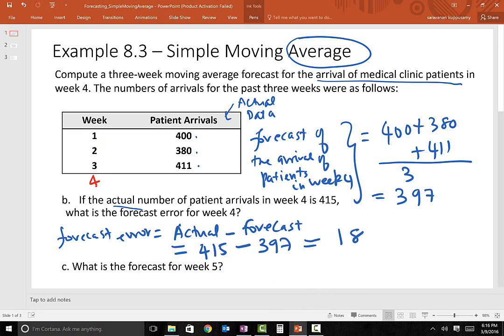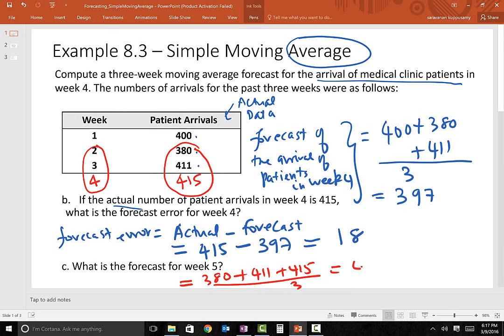During the fourth week, they had an actual arrival of 415. Now they're asking what is going to be the forecasted value for week five. The forecasted value for week five is the average of the last three weeks data. You have to pick week two, week three, and week four. We take an average of these three numbers: 380 plus 411 plus 415 divided by three, which amounts to 402.